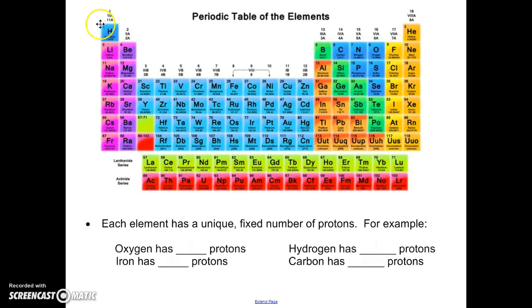Hydrogen, for example, has an atomic number of 1, which means that hydrogen always has one proton. Oxygen, atomic number is 8. There are always 8 protons in oxygen. Iron has an atomic number of 26, so there are 26 protons. And carbon has an atomic number of 6, meaning there are 6 protons in carbon always.